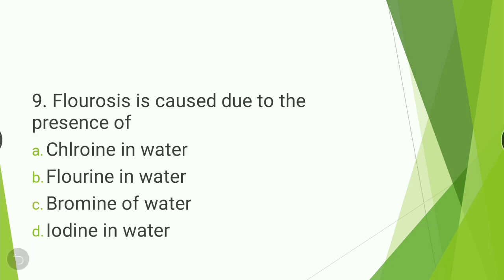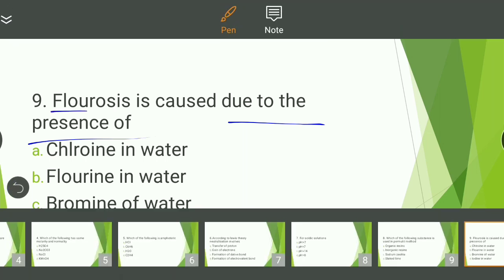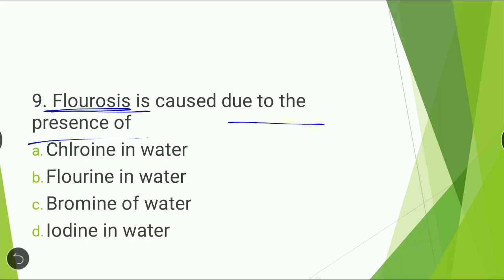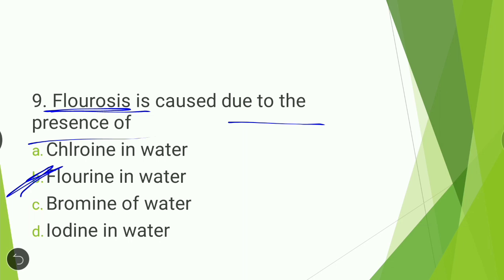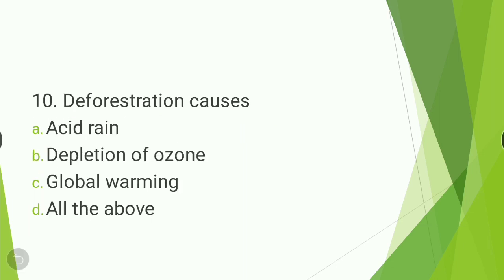Next question: fluorosis is caused due to the presence of — chlorine in water, fluorine in water, bromine in water, or iodine in water? The name itself indicates the answer — fluorosis is caused due to fluorine in water.